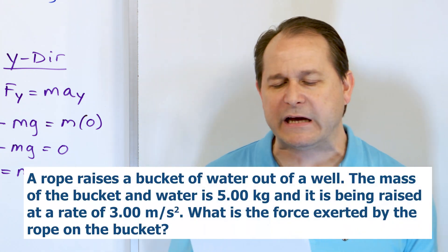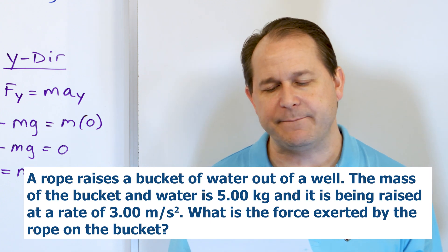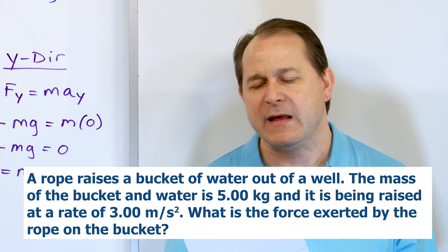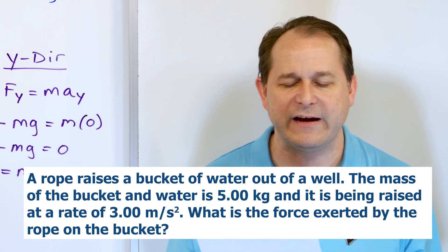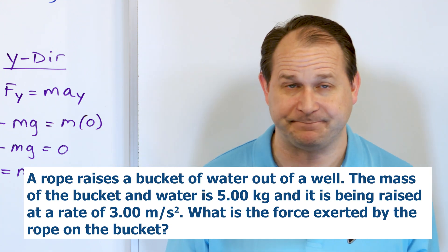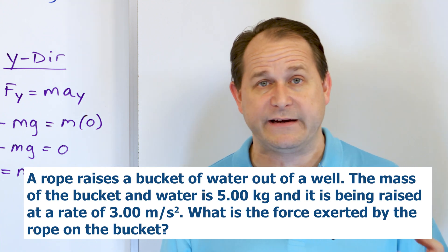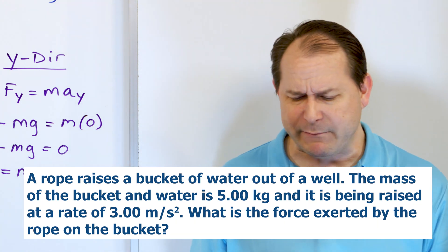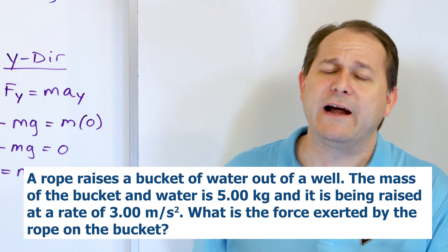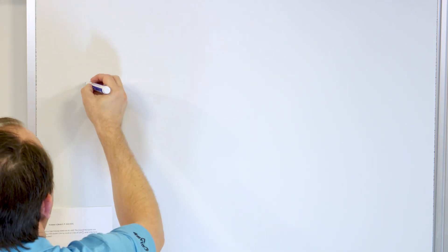Let's take a look at the next problem. A bucket of water is attached to a rope which is being raised out of a well. The mass of the bucket and water together is 5.00 kilograms. If the bucket is being raised at an acceleration of 3.00 meters per second squared, what is the force exerted by the rope on the bucket? We're given the mass and the acceleration, and we want to figure out what force is required to pull that bucket.